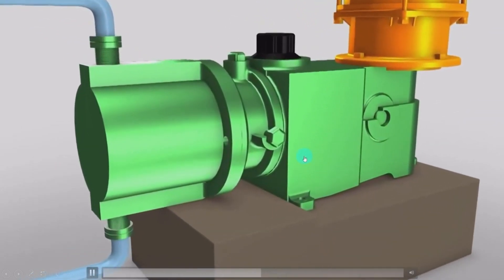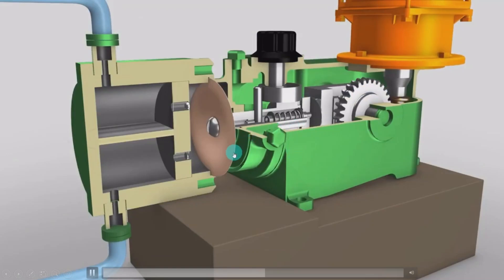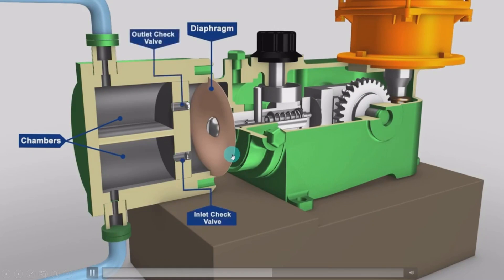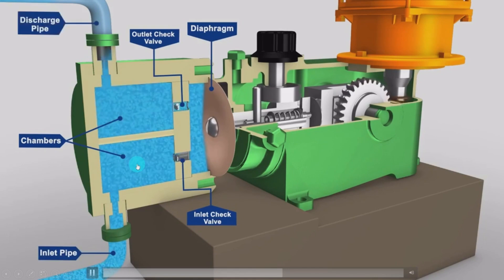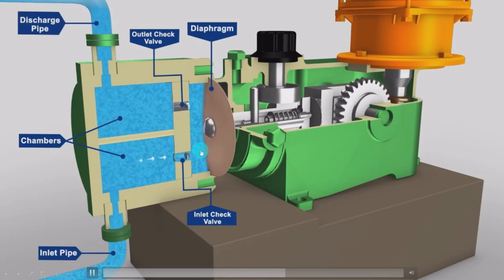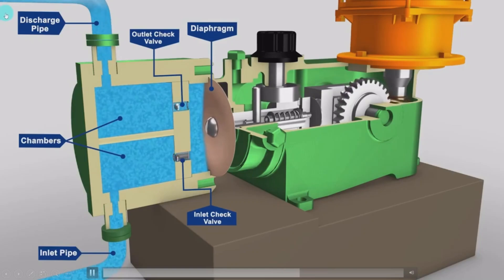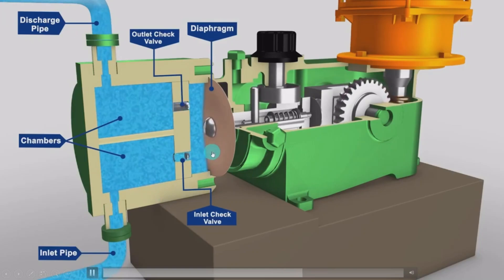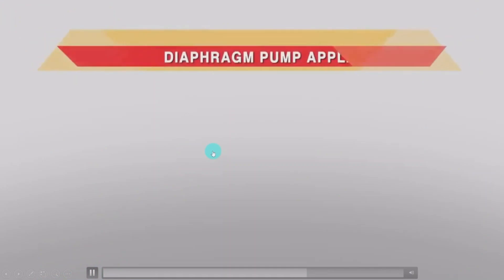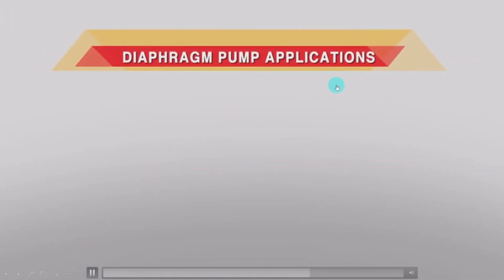The next type is the diaphragm pump. The working is similar, but here a diaphragm is used and air pressure is used to pressurize the fluid from one chamber to another. It has two chambers — fluid enters the first chamber, then enters the diaphragm chamber. Whenever the diaphragm pressurizes, the fluid moves to the second chamber and is discharged through the discharge line.